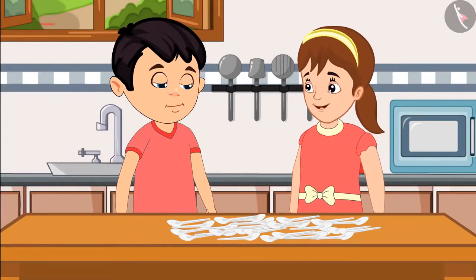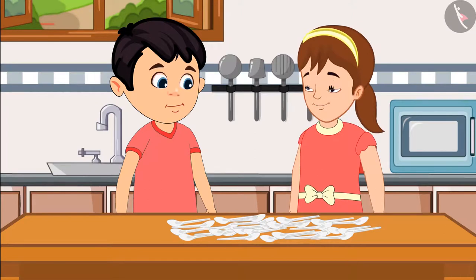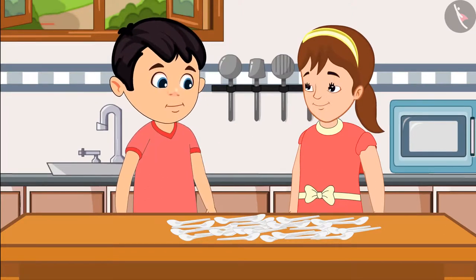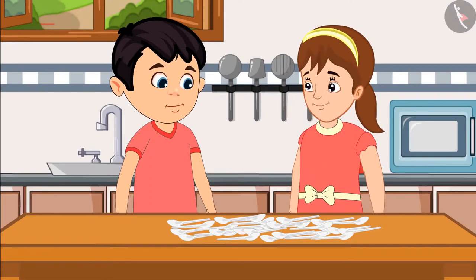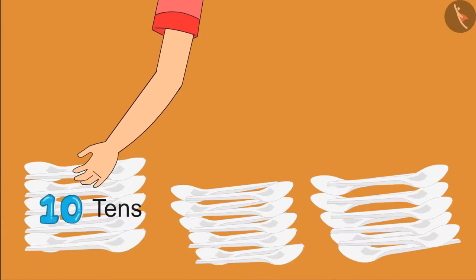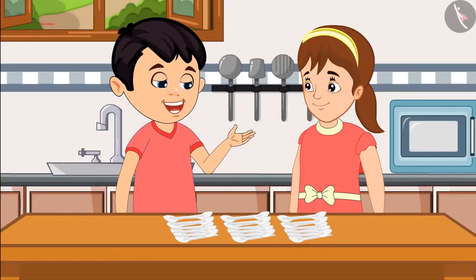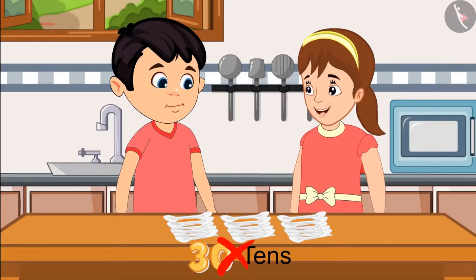But 30 groups are a lot, and these spoons seem very less. Come on, Chotu, let's count them again. Let us divide them into groups of 10 to count them — that will make it easier. 10, 10, and another 10. So this is a total of 30 tens. Hey, Chotu, you are counting it wrong. A group of 10 means one 10.